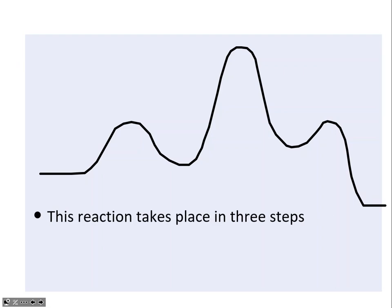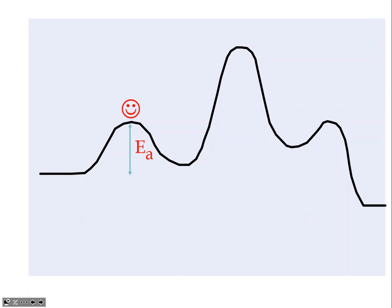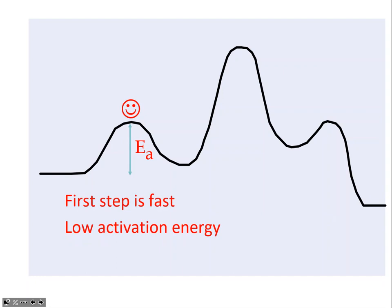Reviewing what's going on here: the reaction takes place in three steps — you notice this because of the three hills. The first activation energy is not the largest of all three, so we would consider that first step to be a fast step. It has a lower activation energy than one of the others, so we would consider this not the rate-determining step.